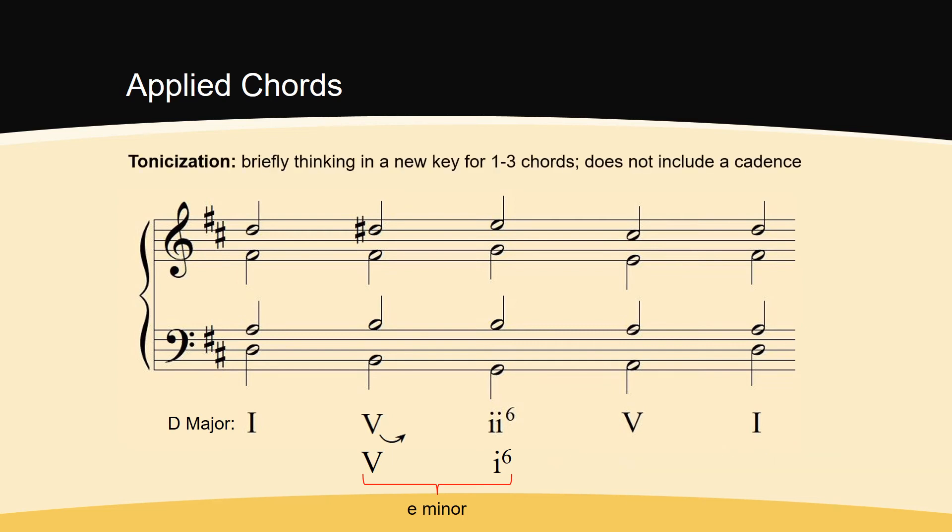Tonicization is briefly thinking in a new key. It is different than modulation, which we will learn about in the next module. Modulation is changing from the current key to a completely new key. Tonicization is brief, includes only a few chords, and does not contain a cadence in a new key.